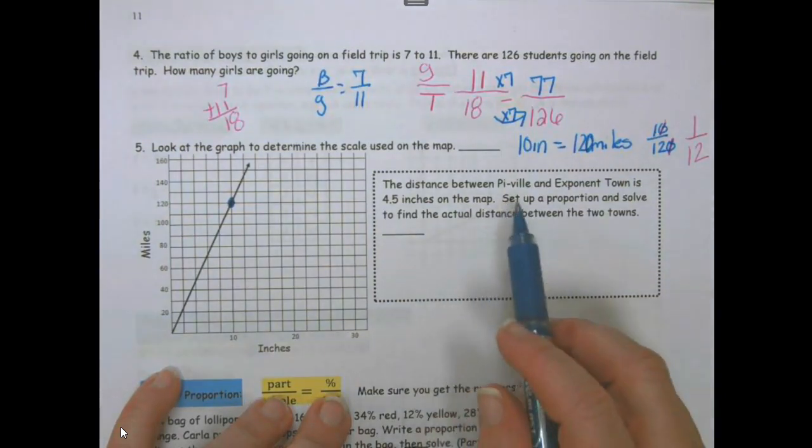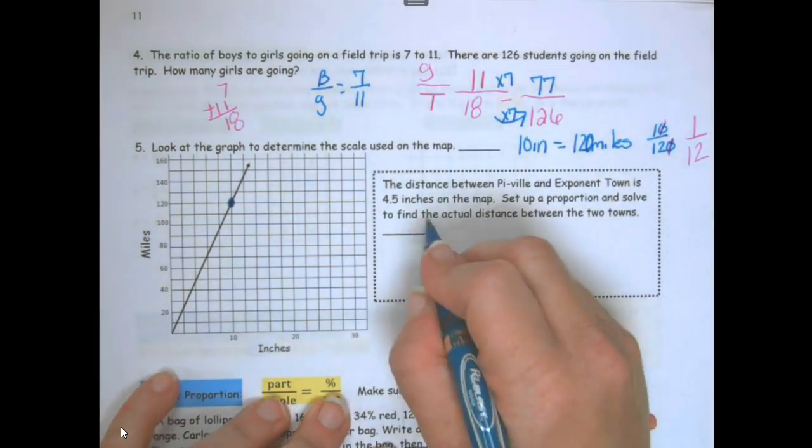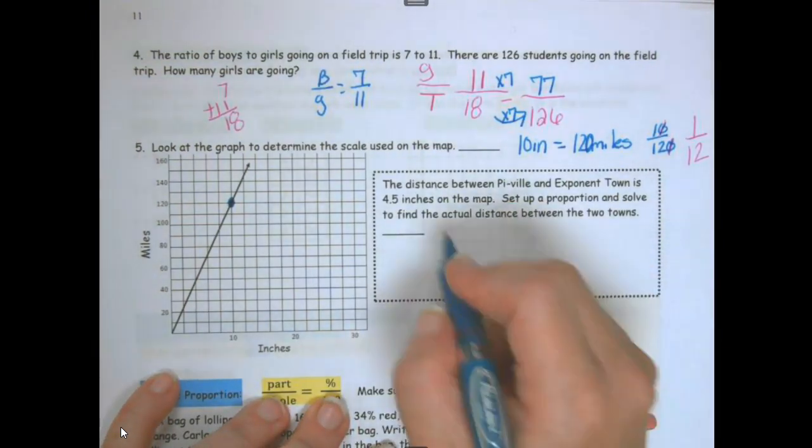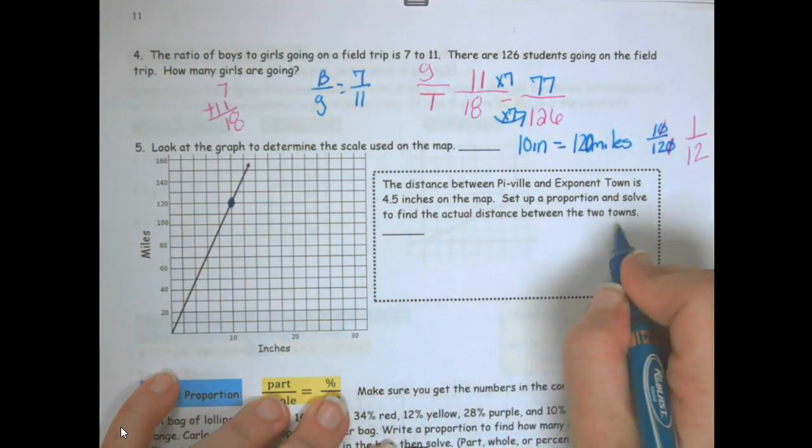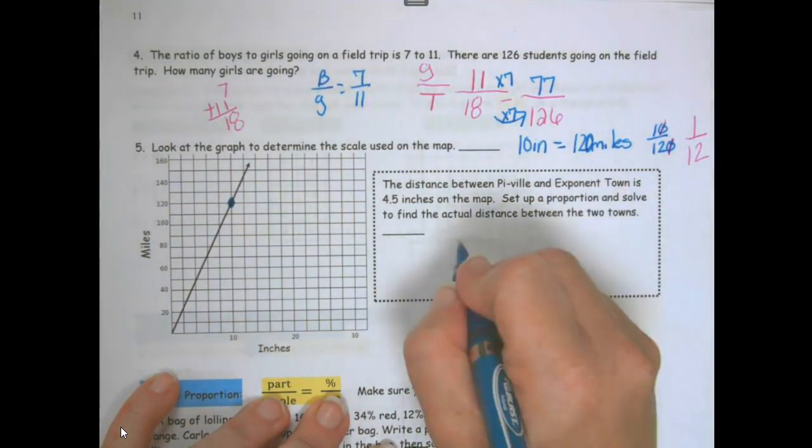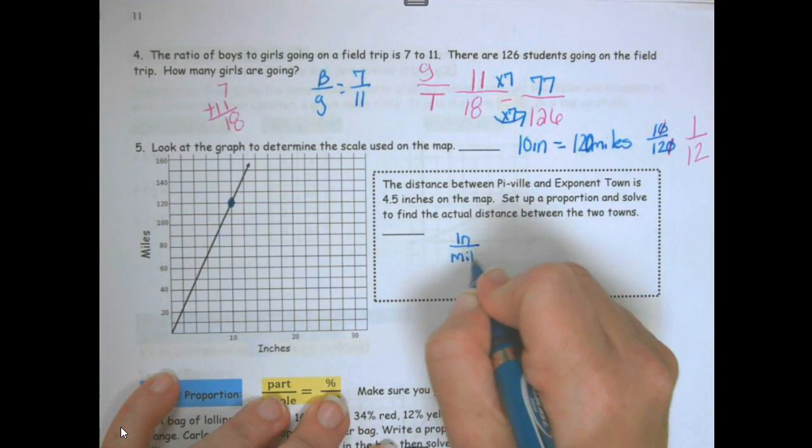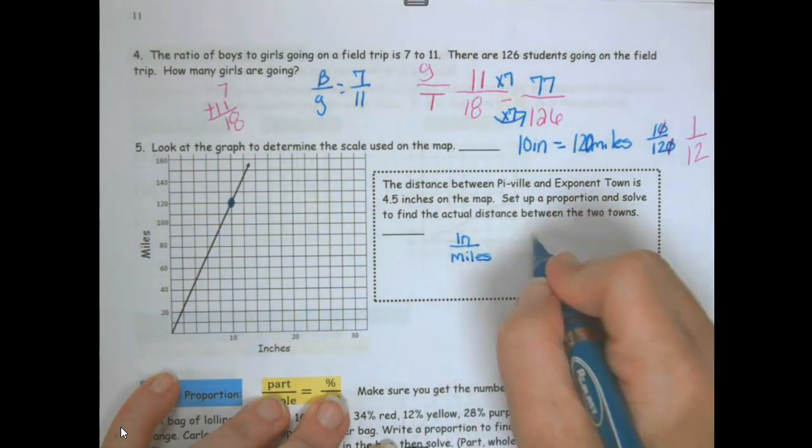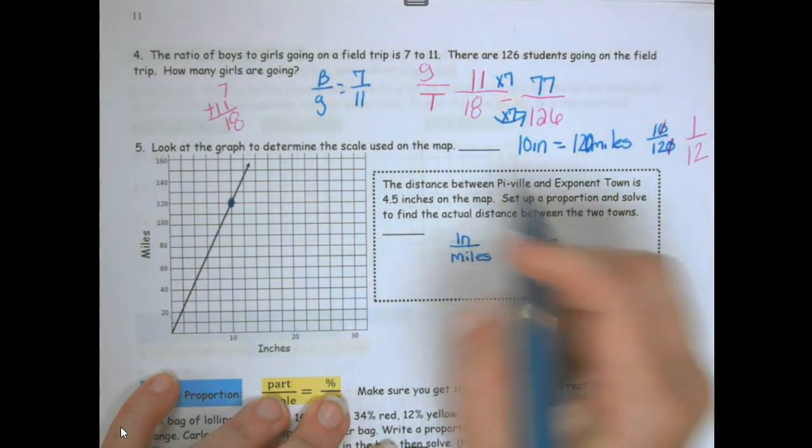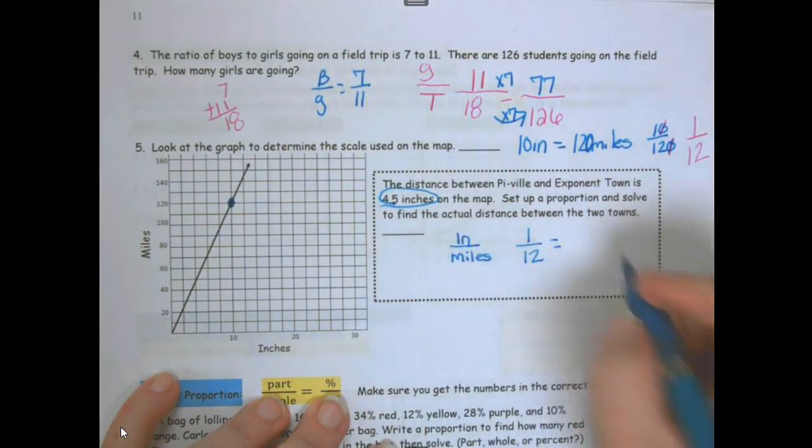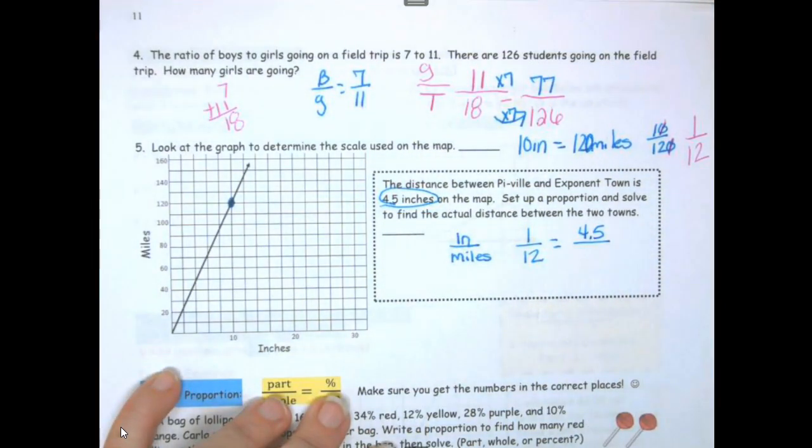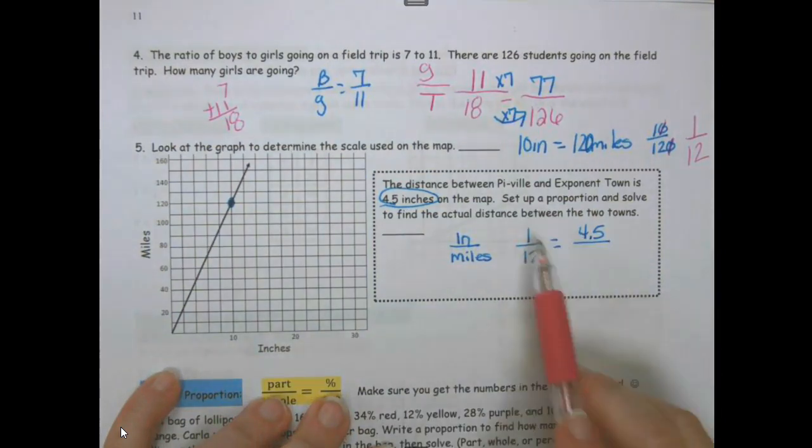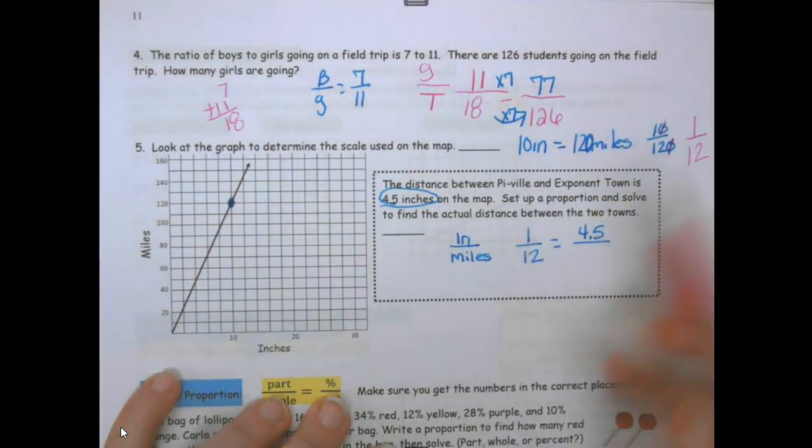The distance between Pyville and Exponent Town is 4.5 inches on the map. Set up a proportion and solve to find the actual distance between the two towns. So we're talking about inches and miles. 1 inch is 12 miles. And on the map we have 4.5 inches. This is inches, inches, miles, and we're looking for miles.